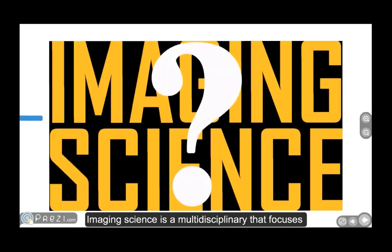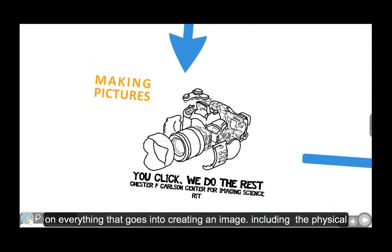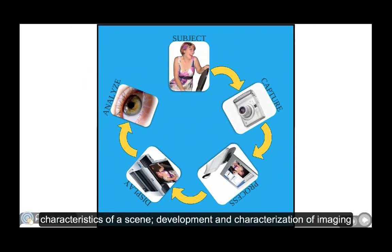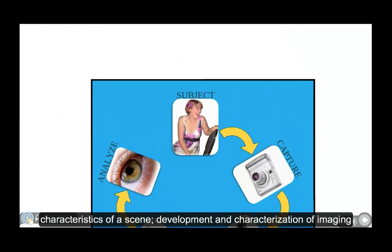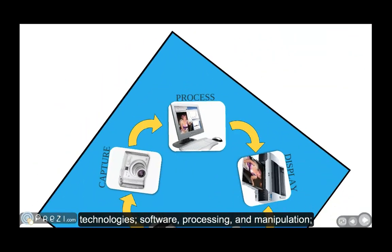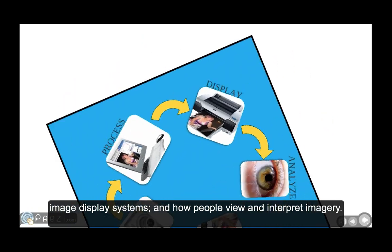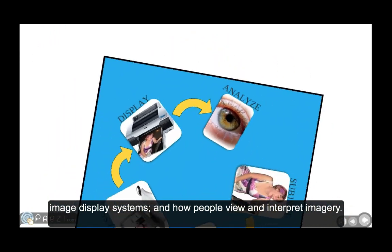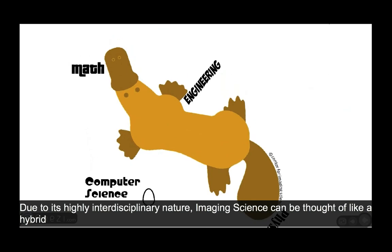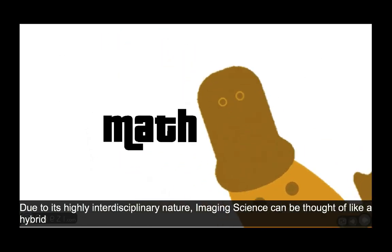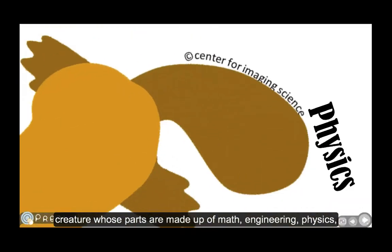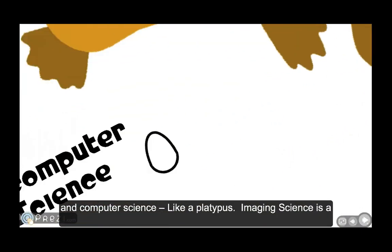Imaging science is a multidisciplinary field that focuses in detail on everything that goes into creating an image, including the physical characteristics of a scene, development and characterization of imaging technologies, software, processing, and manipulation, image display systems, and how people view and interpret imagery. Due to its highly interdisciplinary nature, imaging science can be thought of like a hybrid creature whose parts are made up of math, engineering, physics, and computer science — like a platypus.